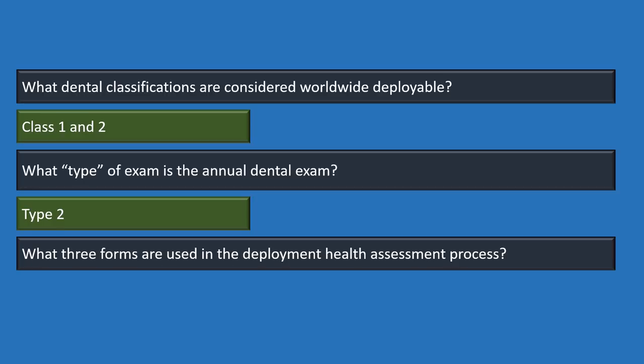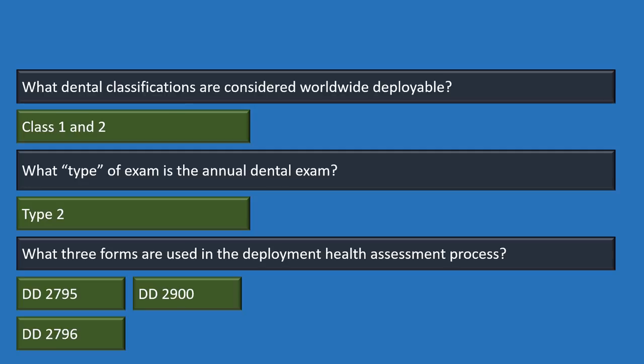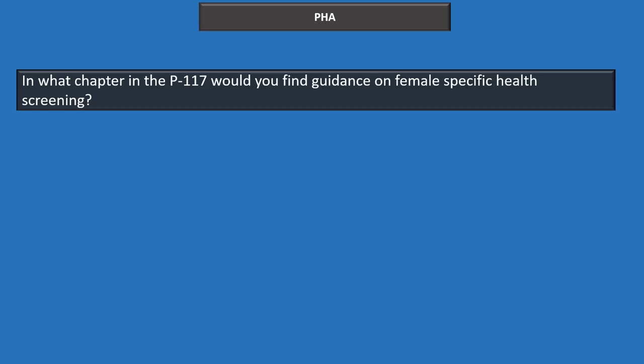The three forms used in the deployment health assessment process are: DD-2795 (pre-deployment health assessment), DD-2796 (post-deployment health assessment), and DD-2900 (post-deployment health reassessment). The P117 is the Manual of the Medical Department; chapter 15, which covers physical exams, is where you find guidance on female-specific health screenings.